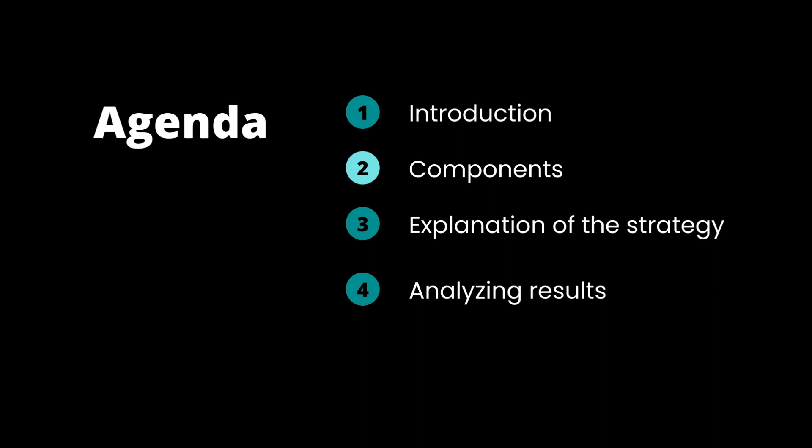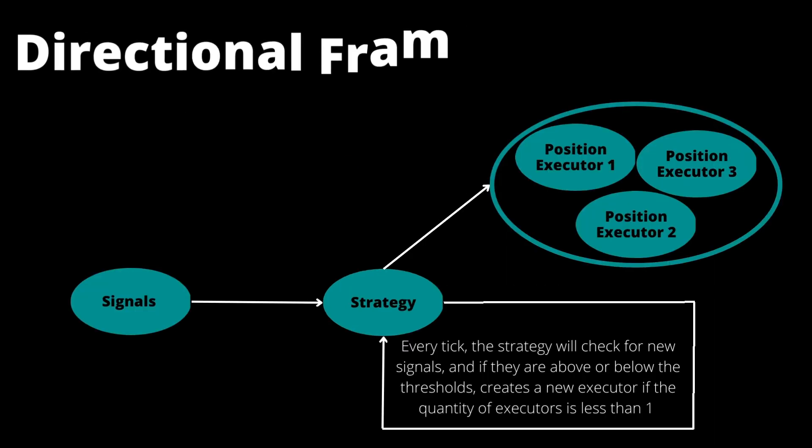Let's review the components involved in the directional framework. On one hand we have the signals, which are calculated based on technical indicators applied to candles. The candles are available because we have a candles feed component in Hummingbot that currently has feeds for Binance and Binance perpetuals. Once we have a signal from a trading pair, the strategy will analyze whether there is an active executor.